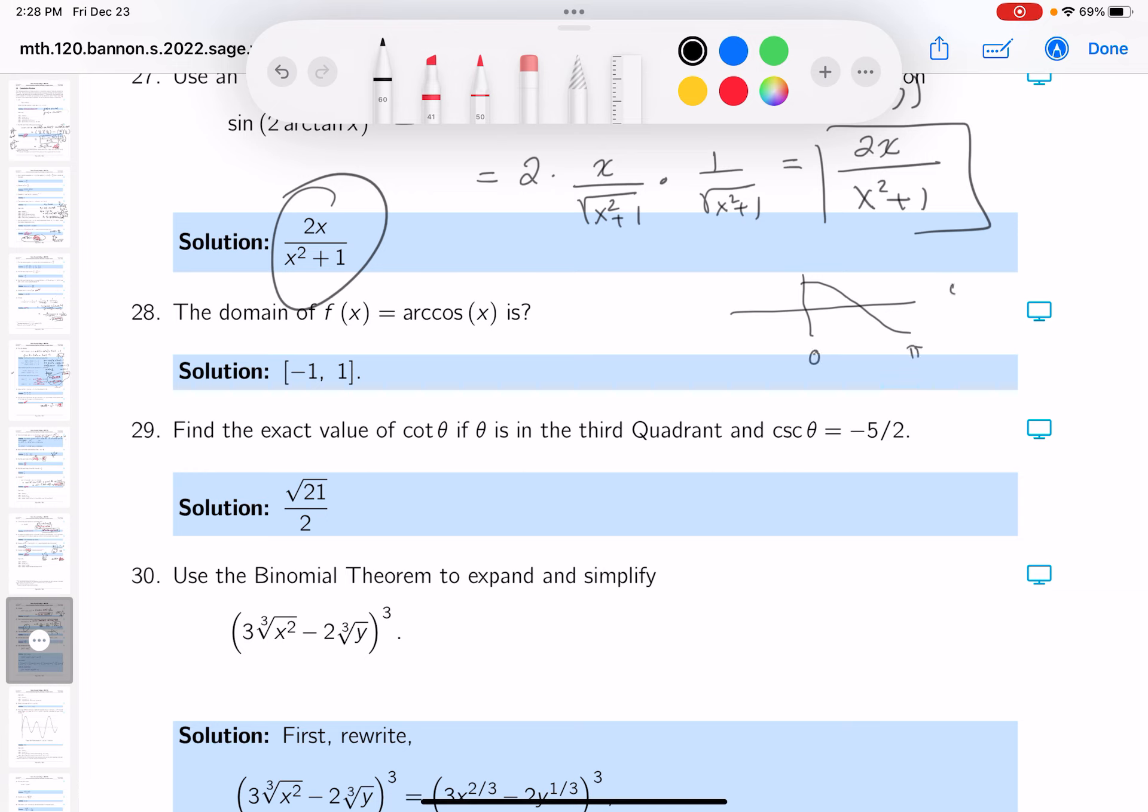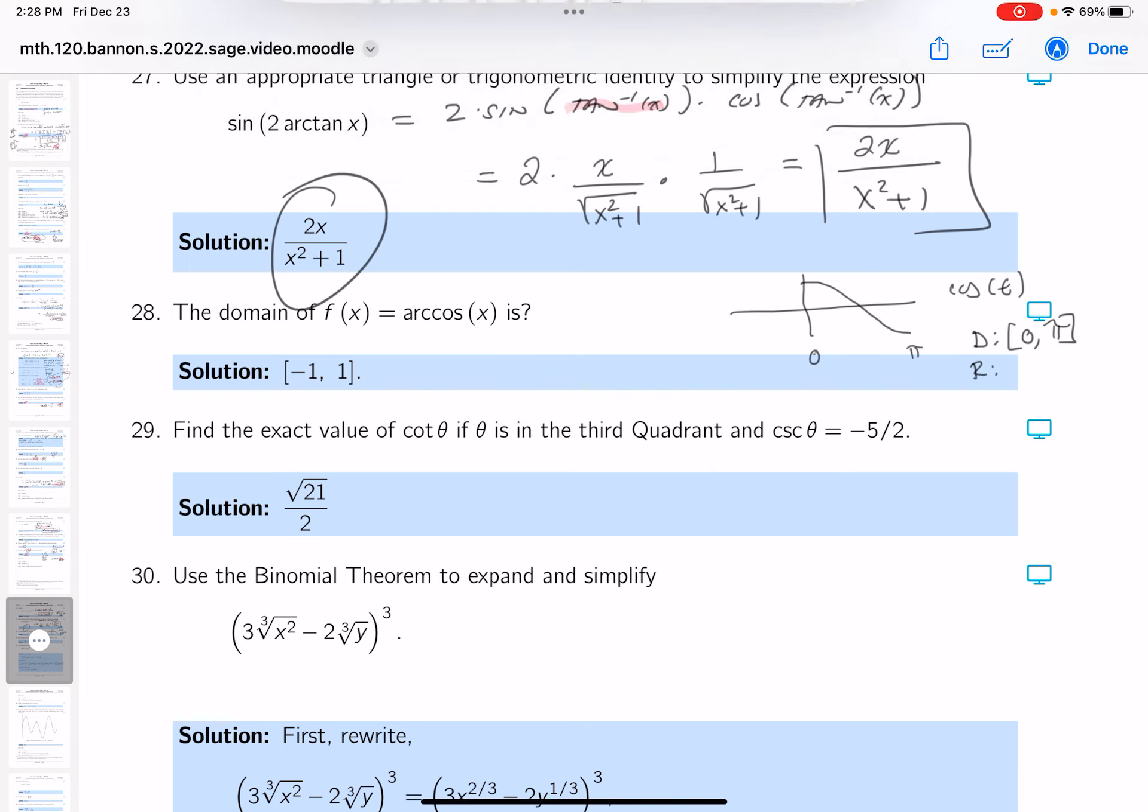This is for the cosine. So its domain is 0 to pi, and its range is from minus 1 to 1.